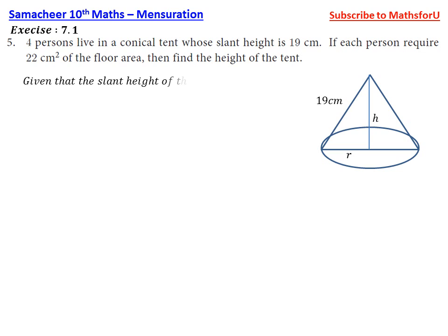Given that the slant height of the tent is 19 cm. One person requires 22 cm². So 4 persons require 22 × 4 = 88 cm².